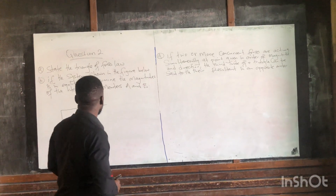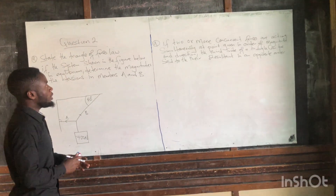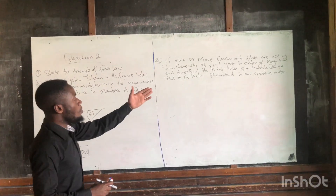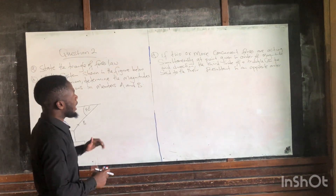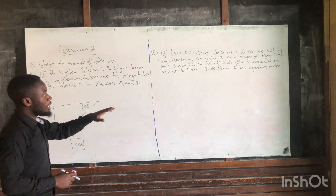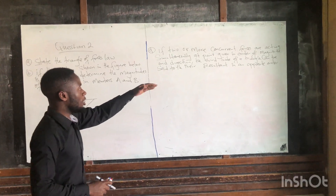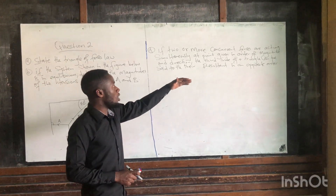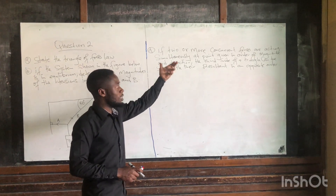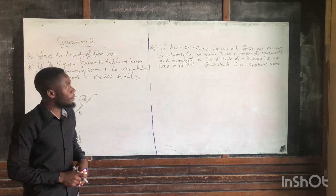So the triangle of forces law states that if two coplanar concurrent forces are acting simultaneously at a point, given in order of magnitude and direction, the third side of the triangle can be represented by the resultant in an opposite order.